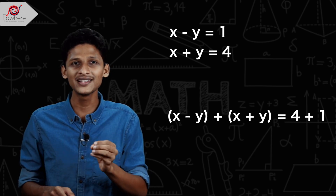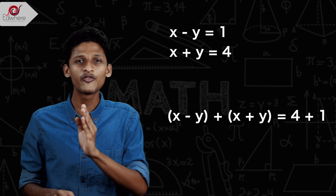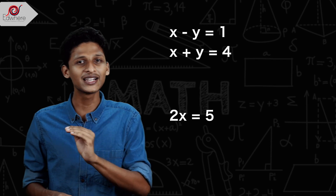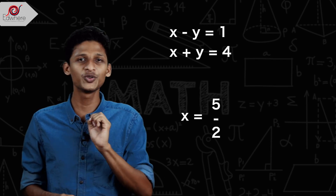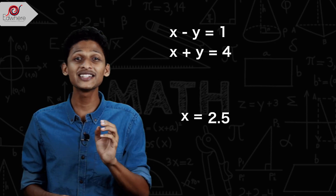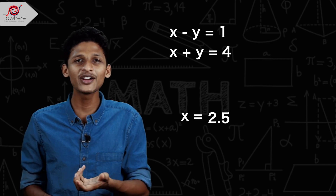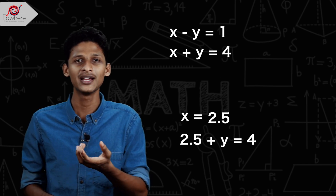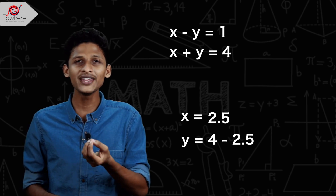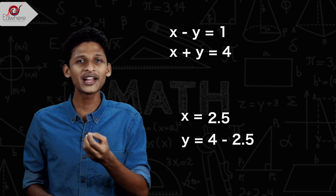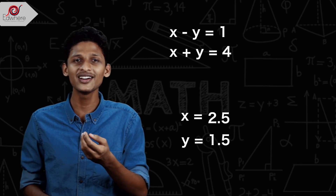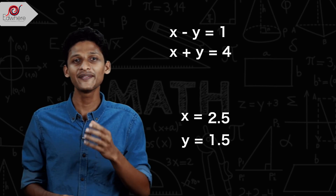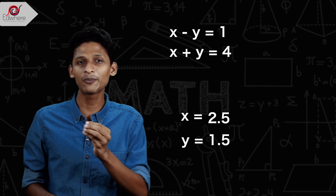We add the two equations: x minus y plus x plus y equals 4 plus 1, so 2x equals 5, which means x is equal to 5 by 2, that is x equals 2.5. Now substituting into x plus y equals 4: y equals 4 minus 2.5, which gives y equal to 1.5. So x value is 2.5 and y value is 1.5. Thank you.